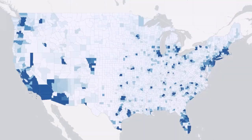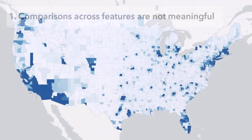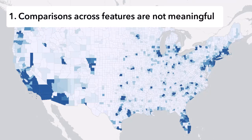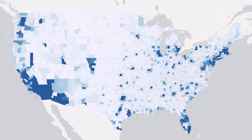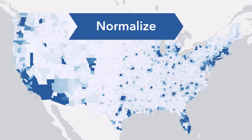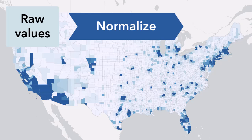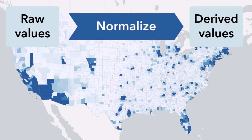I need to normalize this map for two reasons. First, I've noticed that comparisons across features are not meaningful. Second, I remembered the rule that choropleth maps should not use raw values like counts or totals — they should use derived values like percentages, averages, rates, or ratios. Watch my other video, 'Choropleth Maps versus Graduated Symbols,' to learn more about this distinction. If I normalize the data for this map, that will turn the raw values — number of unemployed people — into derived values, and if I do it right, it will create a map where comparisons across features are meaningful.